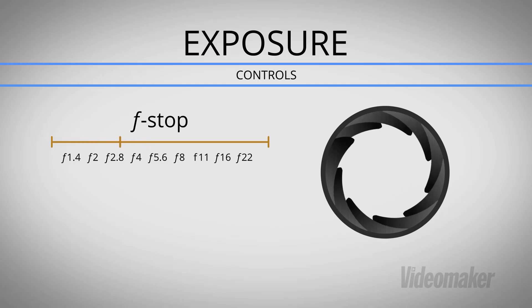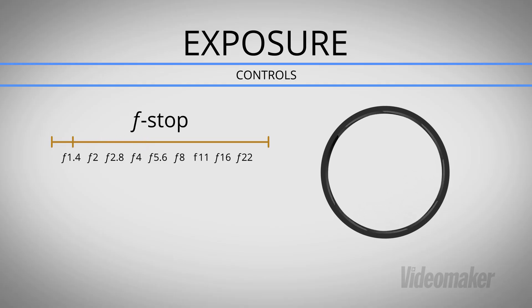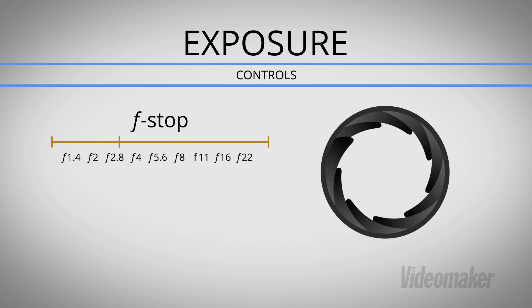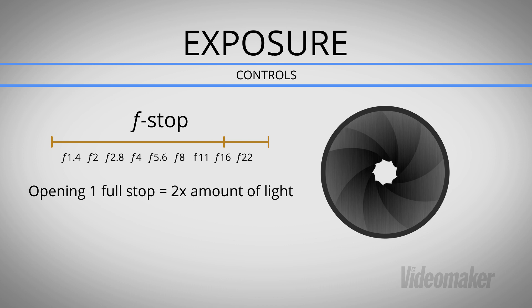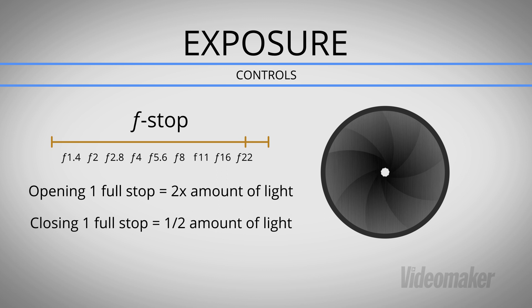In mathematical terms, the f-number is the ratio of the lens's focal length to the diameter of the aperture. Unfortunately, the resulting numbers from this ratio are totally counterintuitive. Lower f-stop numbers represent more light reaching your sensor, while higher f-stop numbers represent less light reaching your sensor. Opening your iris a full f-stop represents a doubling of the amount of light being let through, while closing your iris a full stop represents a halving of the amount of light.